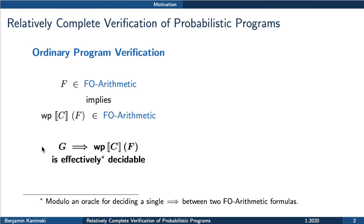This means that this verification task is effectively decidable — almost. We can effectively construct the weakest precondition predicate, and the precondition is also effectively given to us. The only thing left is to check this single implication, which we unfortunately have to offload to some solver or Oracle because this is undecidable. But this gives us relative completeness: the weakest precondition calculus together with first order arithmetic is complete for program verification, relative to an Oracle for this single implication.